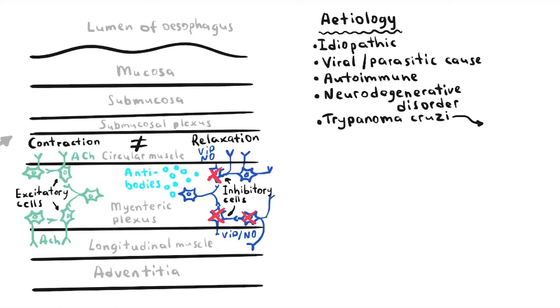Trypanosoma cruzi, the parasite that causes Chagas disease, has been shown to infect myenteric neurons. This in turn causes an immunologic reaction to myenteric nerve neurons, leading to loss of the esophageal and lower esophageal sphincter intramural ganglia.